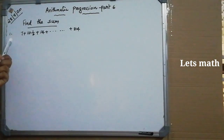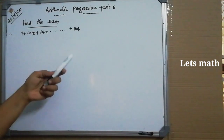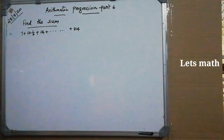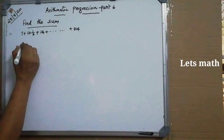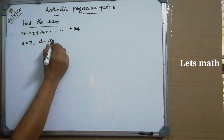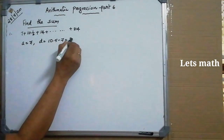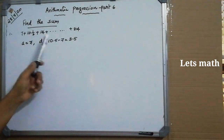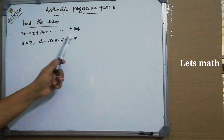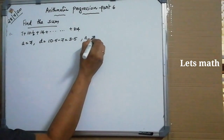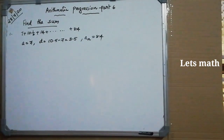Find the sum: 7 + 10½ + 14 + ... + 84. This is an AP with first term A = 7 and common difference D = 10.5 - 7 = 3.5. The last term An = 84. Finding number of terms: N = (84 - 7)/3.5 + 1 = 77/3.5 + 1. Multiplying numerator and denominator by 10: 770/35 = 22, so N = 22 + 1 = 23 terms.